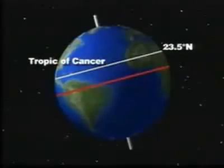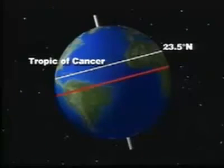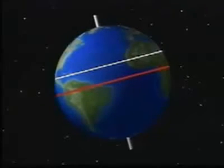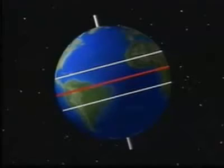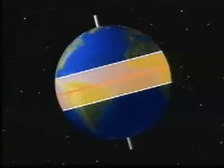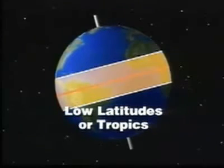23 and a half degrees north of the equator is a line of latitude called the Tropic of Cancer. When the northern hemisphere is tilted toward the Sun, sunlight falls directly along this line. When the southern hemisphere is facing the Sun, sunlight falls upon another line located 23 and a half degrees south of the equator called the Tropic of Capricorn. Areas of the world located between these two lines are called the low latitudes, or the tropics.